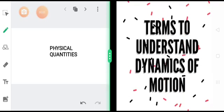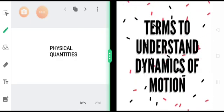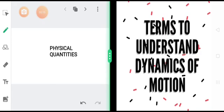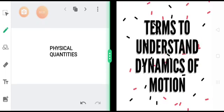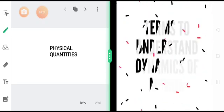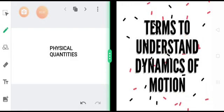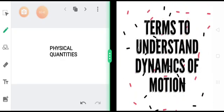Good morning students and welcome back to physics classroom. In our previous class we discussed rest and motion: if an object changes its position with respect to surroundings it is in the state of motion, while if it does not change its position it is in the state of rest. Rest and motion are relative terms. Today we will proceed further and introduce certain terms to help us understand the basic concept of motion.